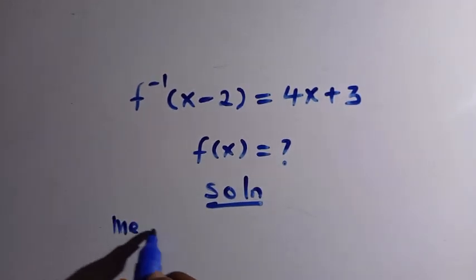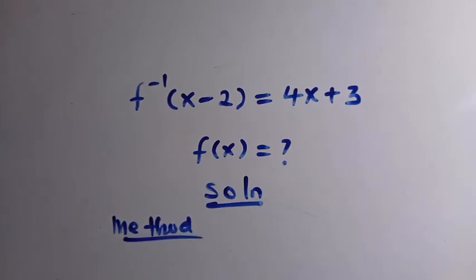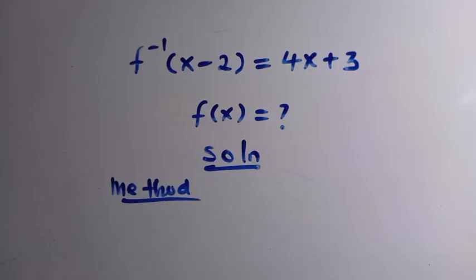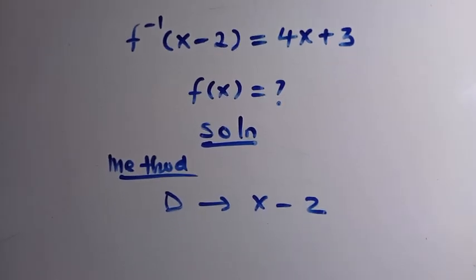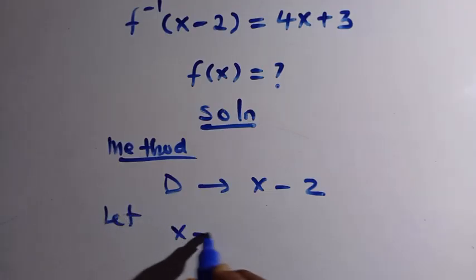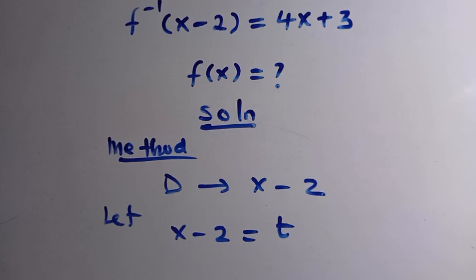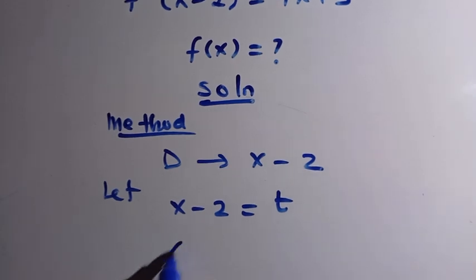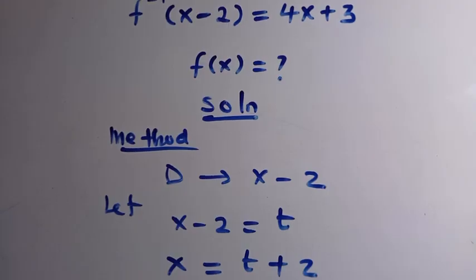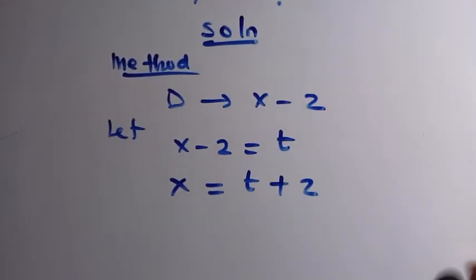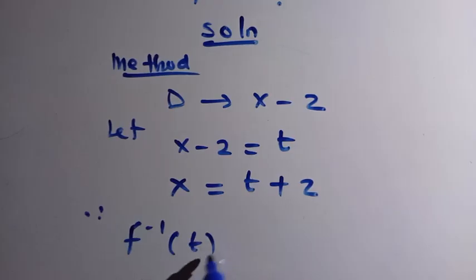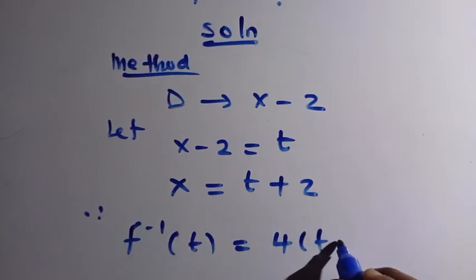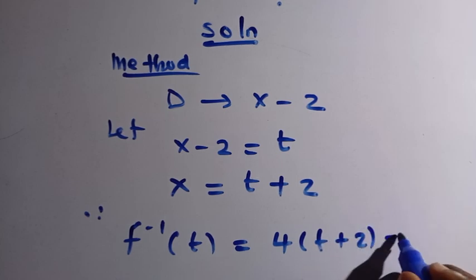Now let's solve the same question with Method 2: the substitution method. From the domain, we have x minus 2. Let x minus 2 equal t, so x equals t plus 2. Substituting into the original equation, f inverse of t equals 4 times (t plus 2) plus 3.